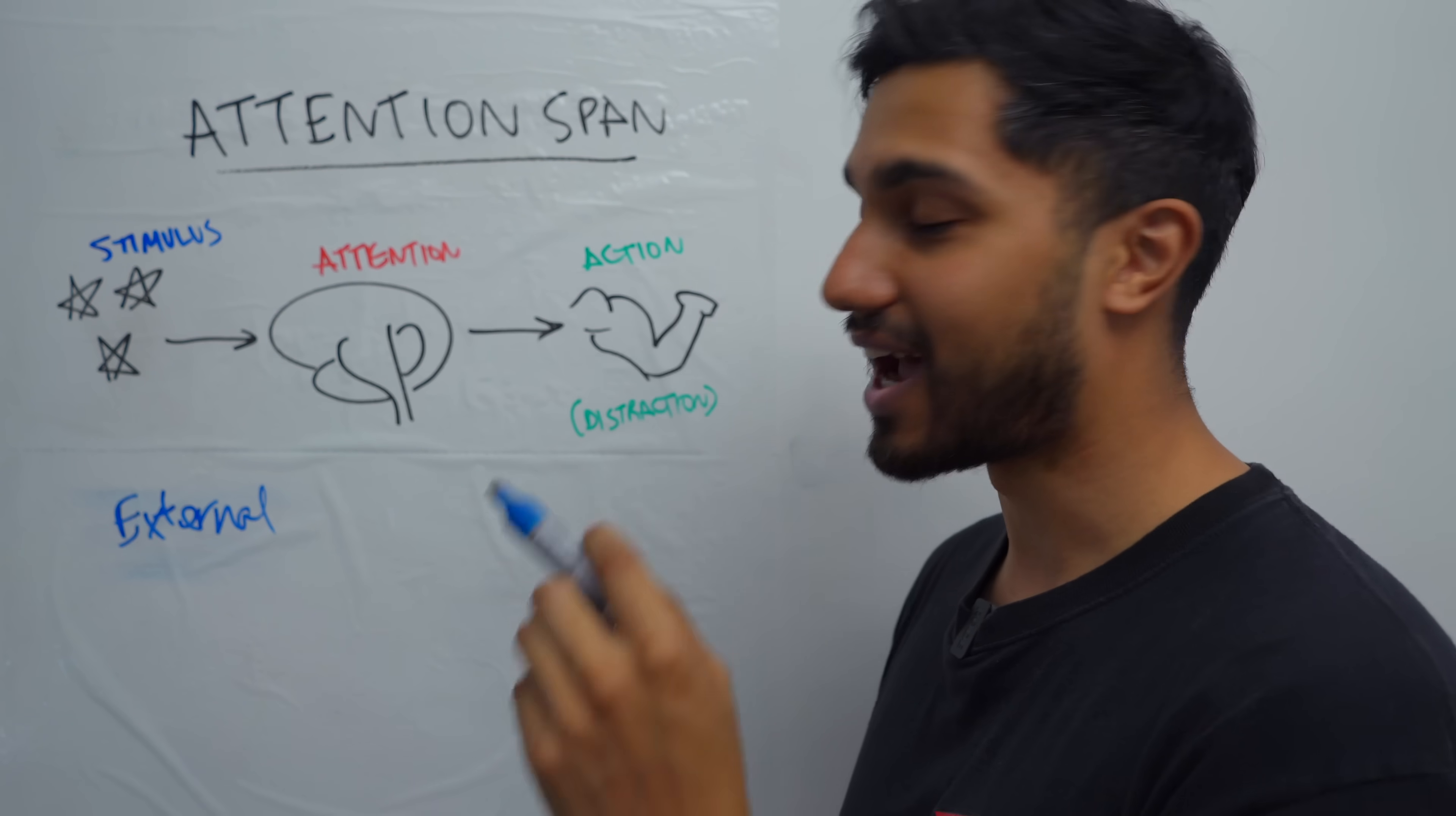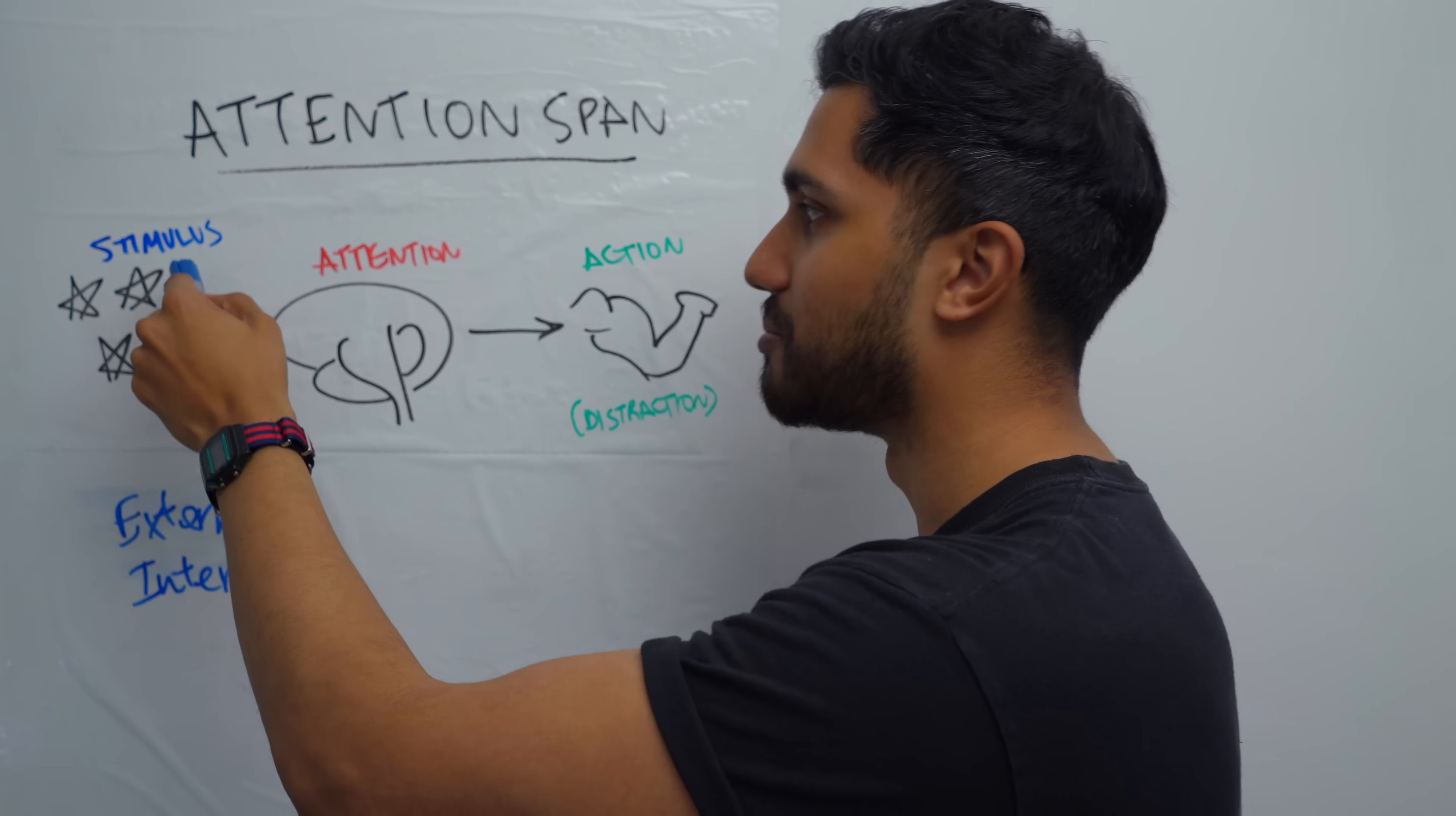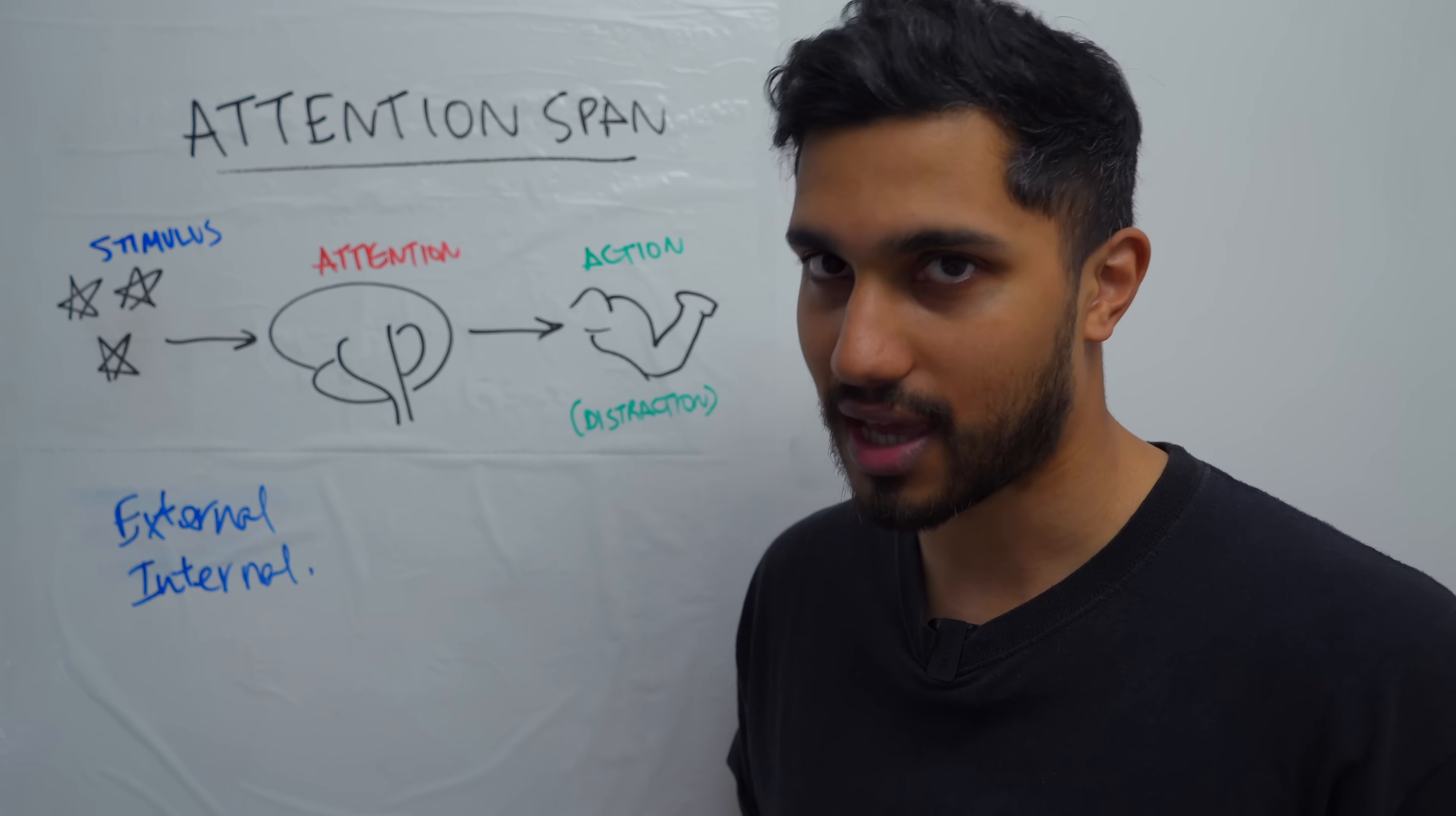Now, the difference between us and animals is that we also respond to internal cues. We have random spontaneous thoughts that we have no control over called intrusive thoughts that also can be an internal stimulus that can demand our attention. And then we get distracted. Now, these random intrusive thoughts that come into our mind, they are useful to us. They're the reason why we have been able to build so much is because we can think about things even when we're not there.